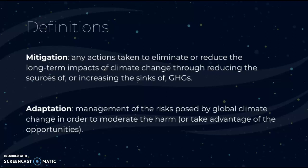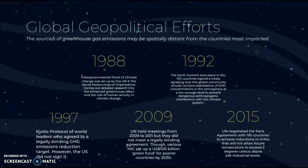First, global geopolitical efforts. We're going to look at a timeline of the global geopolitical efforts made to diminish the impacts of climate change. One thing to recognize is that the sources of greenhouse gas emissions may be spatially distant from the countries most impacted, and that creates a need for global recognition of the issue, because it can affect nations that may not necessarily be involved.